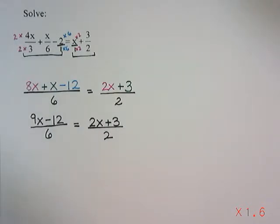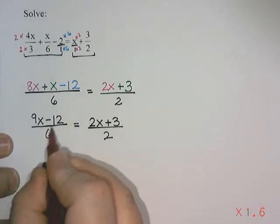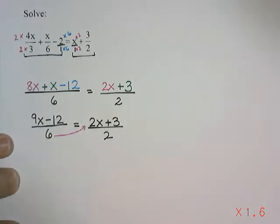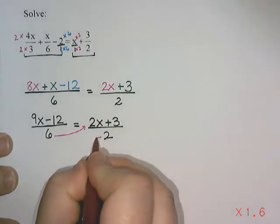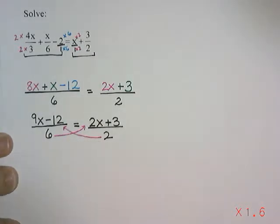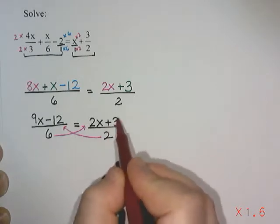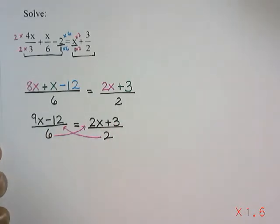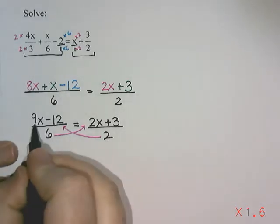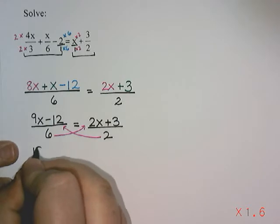Next step, we're going to do something called cross-multiplying. When we cross-multiply, we take the denominator from one side and multiply it by the numerator on the other side. Then we take the denominator from this side and multiply it by the numerator on that side. So we're going to take everything on the left side and multiply it by 2, and everything on the right side and multiply it by 6. So 2 times 9x is 18x, and 2 times negative 12 is negative 24.